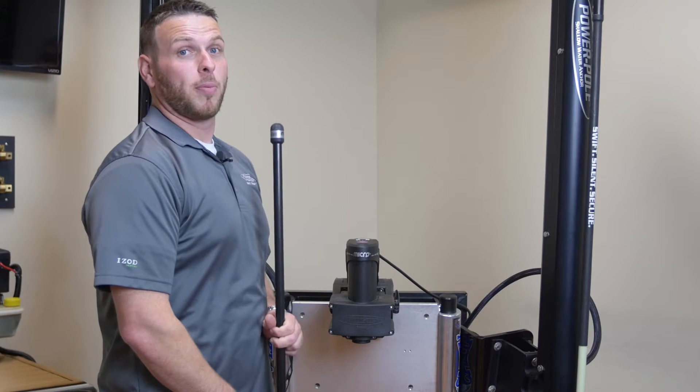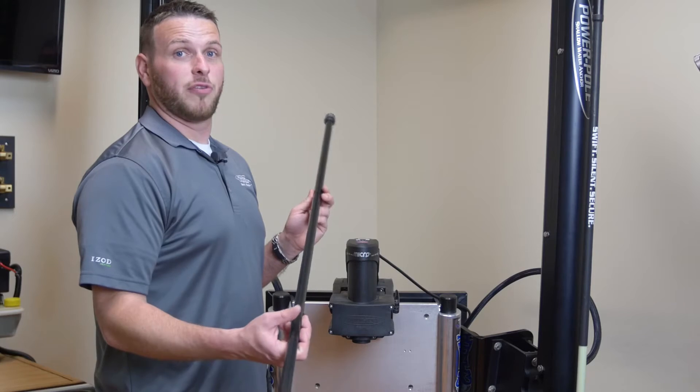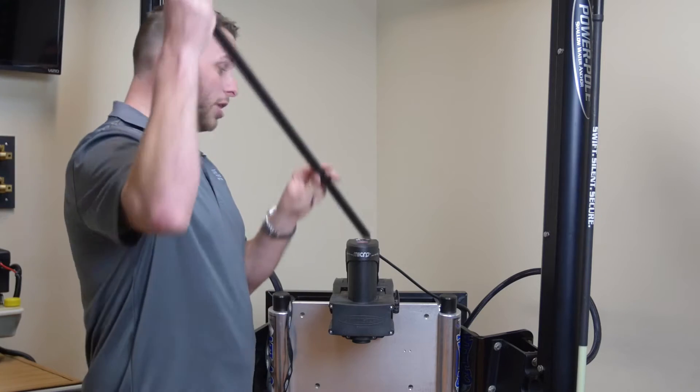Today I'm going to show you how to calibrate a PowerPull Micro Anchor. First thing you're going to do is get your eight and a half foot micro spike and insert it into the micro unit.